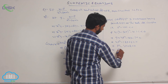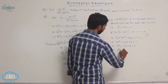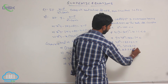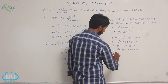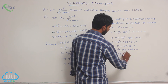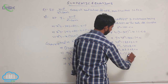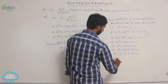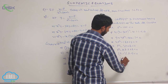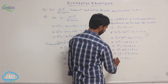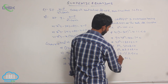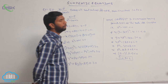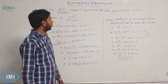Factoring p squared minus 3p plus 2: we get p squared minus 2p minus p plus 2, which factors as (p minus 1)(p minus 2) less than 0. That implies 1 less than p less than 2. Therefore, the value of p lies between 1 and 2.